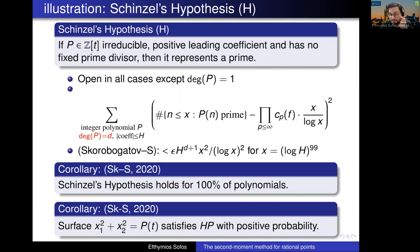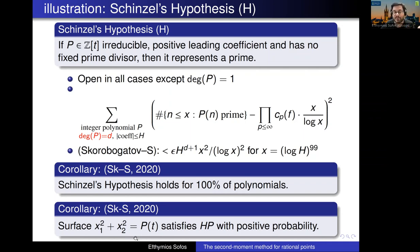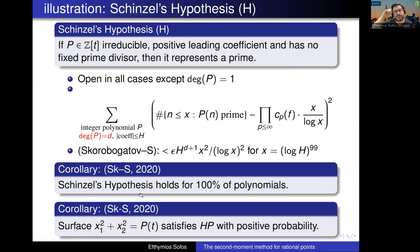Using ideas of Colliot-Thélène from the 70s, you can prove directly results about Diophantine equations. One very simple example: consider the equation where a sum of two squares equals a polynomial — this is the simplest example of a satellite equation. You want to solve it with an integer t. Directly from this corollary, and using ideas of Swinnerton-Dyer and Colliot-Thélène, we proved that the Hasse principle holds with positive probability for this surface. The problem is there is always some loss of information when you're just using prime problems to solve polynomial problems.